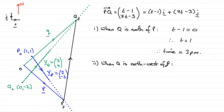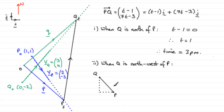Now for when Q is northwest of P, let's draw a little sketch. Q would be up here and P would be down here. Drawing a triangle, when Q is northwest of P this angle marked as north would be 45 degrees, meaning this would also be 45 degrees.